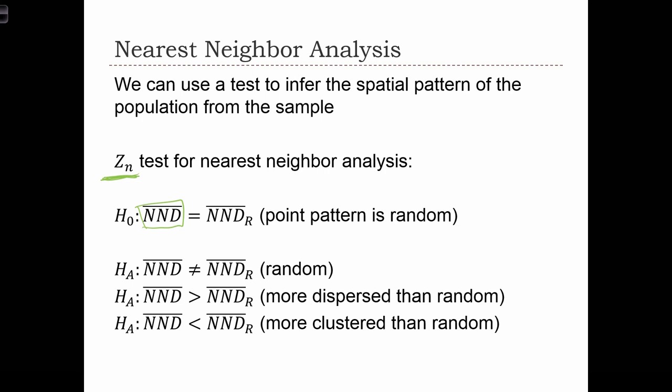We can have three different alternatives: a non-directional case where NND bar is not the same, or NND bar greater than NND bar R indicating more dispersion, or a left tail test where NND bar is significantly less than the random case, indicating clustering.